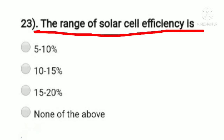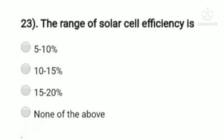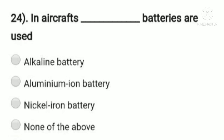Question 23: the range of solar cell efficiency is — option A: 5 to 10%, option B: 10 to 15%, option C: 15 to 20%, option D: none of the above. Solar cell efficiency is mainly 10 to 5%, so option B, 10 to 15%, is the right answer. For question 24, in air caps which battery is used — option A: alkali battery, option B: aluminium iron battery, option C: nickel iron battery, option D: none of the above. For air cap purposes, the nickel iron battery is mainly used, so option C is the right answer.